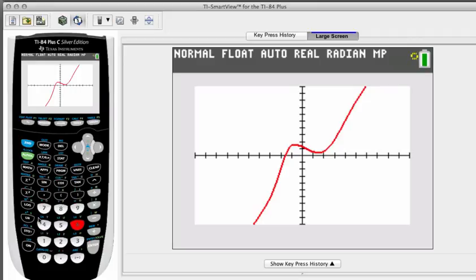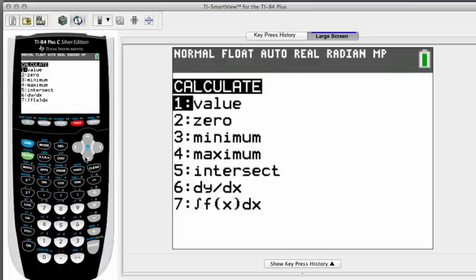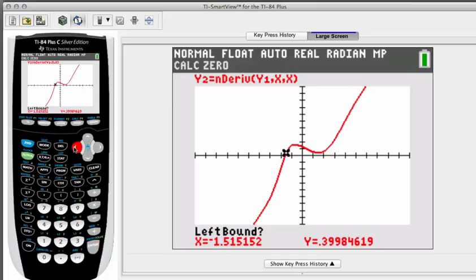Let's go ahead and find that. If we hit trace and I'm going to trace over to about where it crosses the x-axis, and I'll run my root finder, my zero finder.